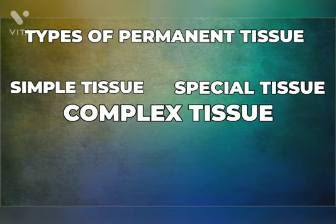Complex tissue is comprised of different kinds of cells that are adapted to perform a common function and work together as a single unit, such as xylem and phloem. Special tissue is also known as special structured or gland-associated tissue.